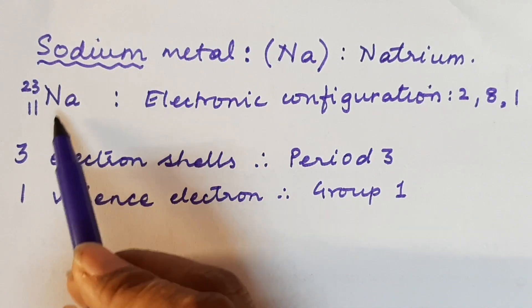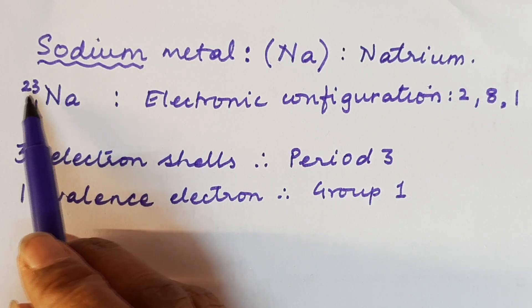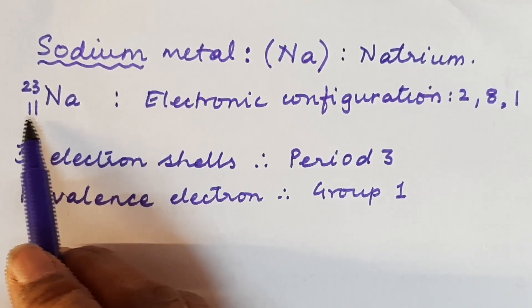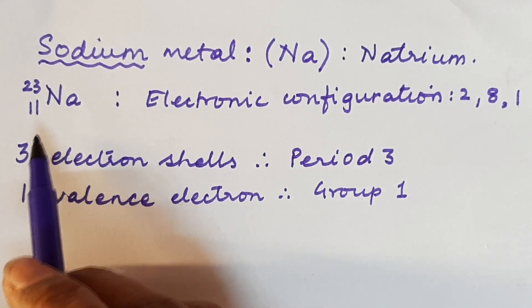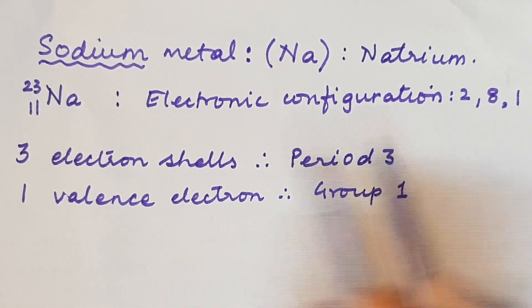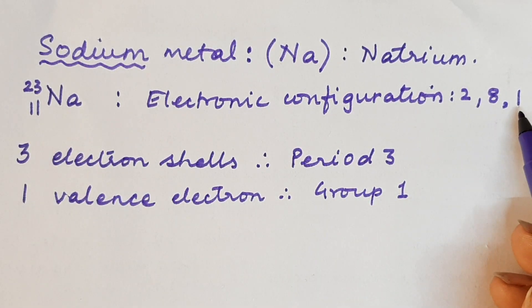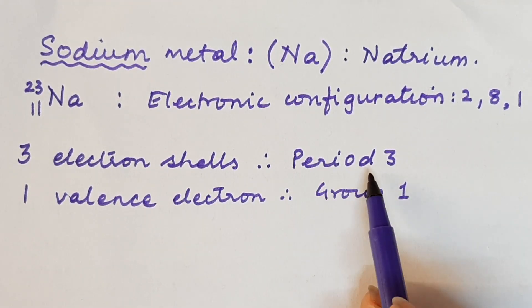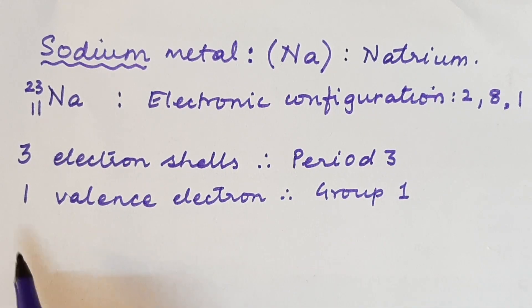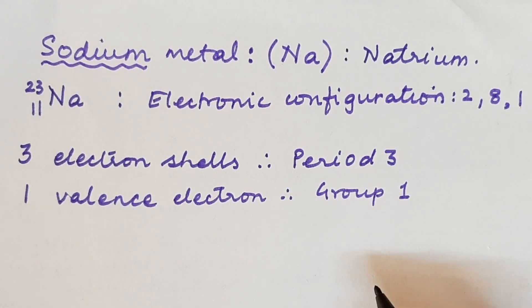The symbol of the metal is Na with the superscript 23, which tells the number of protons and neutrons, and the subscript 11, which is the atomic number indicating the number of protons in the nucleus and also the electrons in the orbits. The electronic configuration with 11 electrons becomes 2, 8, 1 — so it has 3 electron shells, belongs to period 3, and has one valence electron, placing it in group 1.